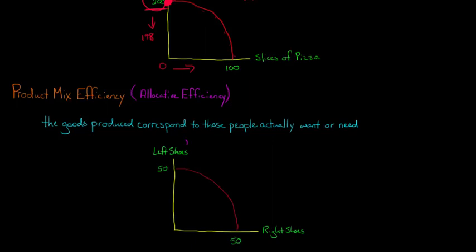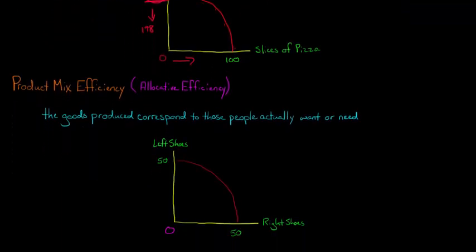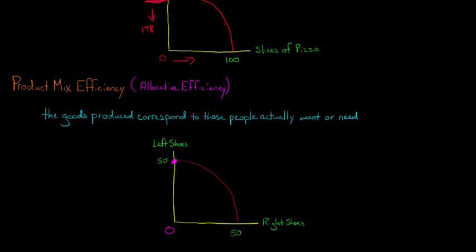Let's say we have an economy where we produce left shoes and right shoes. If the economy just focused specifically on left shoes and produced zero right shoes, we'd have 50 left shoes and zero right shoes. Conversely, if we just focused on right shoes, we'd have 50 right shoes and zero left shoes. Now, it would be efficient in production to produce 50 left shoes and zero right shoes, because at that point we couldn't produce any right shoes without decreasing our production of left shoes. So that point would technically be efficient in production.